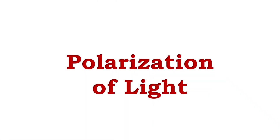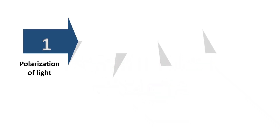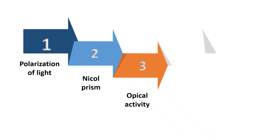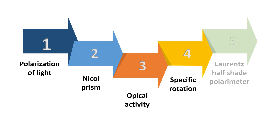In this video, we are going to talk about the concept of polarization of light. We will discuss polarizers like the Nicol prism, then cover optical activity and its properties, followed by specific rotation, and finally the Laurent half-shade polarimeter.